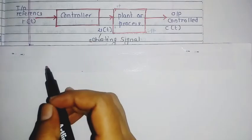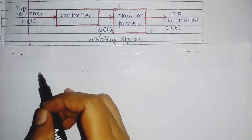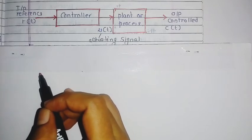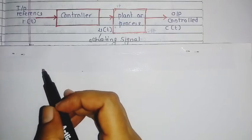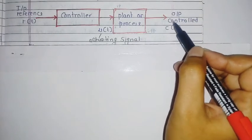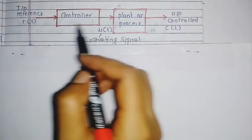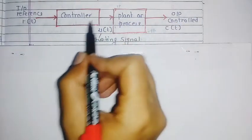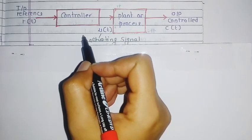Examples of open loop control systems are automatic toaster, coffee maker, and traffic control. In these systems, when the output changes, the effect does not feed back to the input — that is why we call it an open loop system.